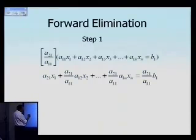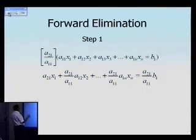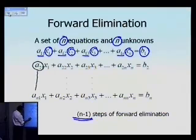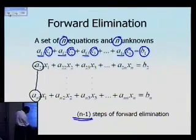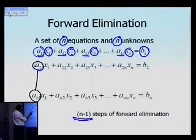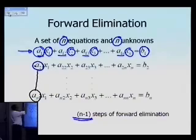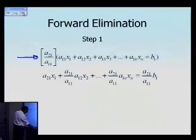In the first step of forward elimination, we want to make the elements in the first column below the first row equal to zero. To do this, we divide by element a sub 1,1 and multiply by a sub 2,1 — that gives us the multiplier. We apply that multiplier to the first row and then subtract it from the second equation, so the coefficient of x1 in the second equation becomes zero.